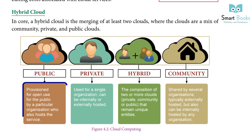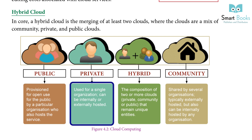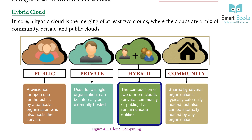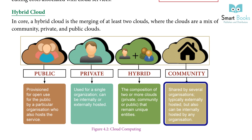Summary of cloud types: Public — provisioned for open use by the public, hosted by a particular organization. Private — used for a single organization, can be internally or externally hosted. Hybrid — a composition of two or more clouds (private, community, or public) that remain unique entities. Community — shared by several organizations, typically externally hosted, but can also be internally hosted by any organization.